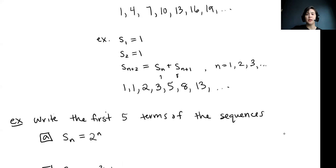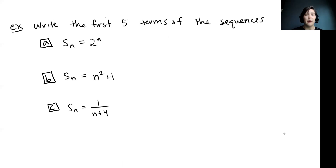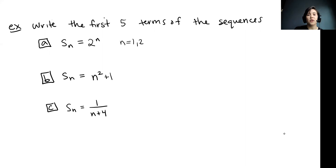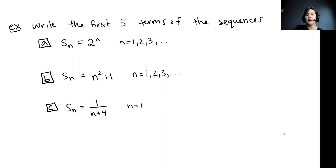Now let's do a few examples. You can pause the video and try to write the first five terms of the following sequences. We've got Sn equals 2 to the n for n equals 1, 2, and so on. Our second sequence is Sn equals n squared plus 1 for n equals 1, 2, 3, and so on. Go ahead, pause the video and try to write the first five terms of each of those sequences.